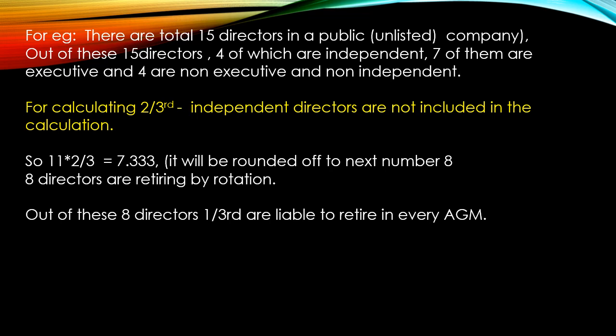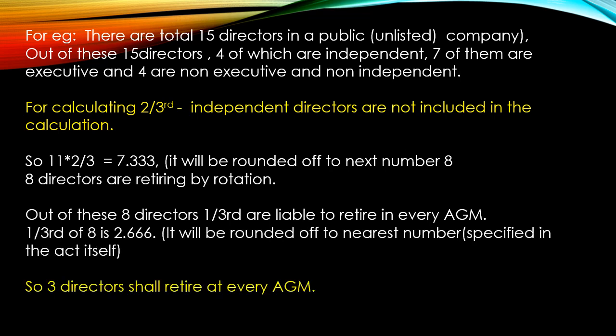So two-thirds of 11 is rounded up to 8 — meaning 8 directors are liable to retire by rotation. Now out of these 8 directors, we calculate one-third, which gives 2.666. So 8 multiplied by one-third equals 2.666, which we round off to the nearest number as specified in the Act. Therefore, 3 directors shall retire at every AGM.